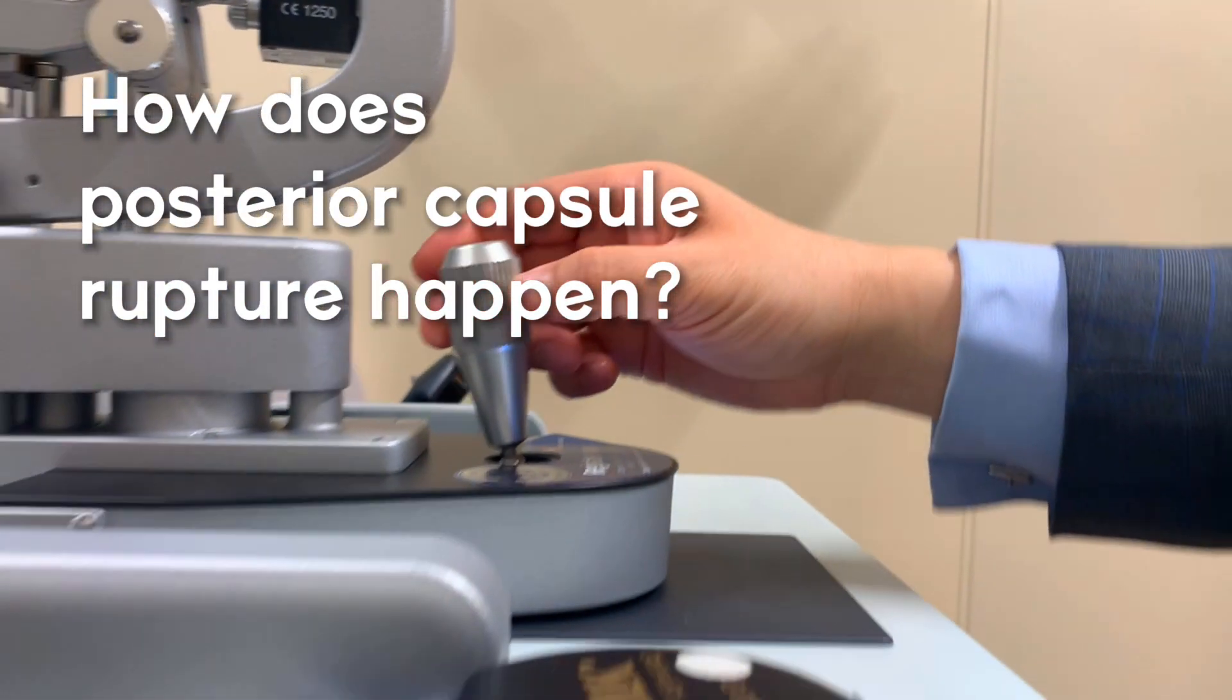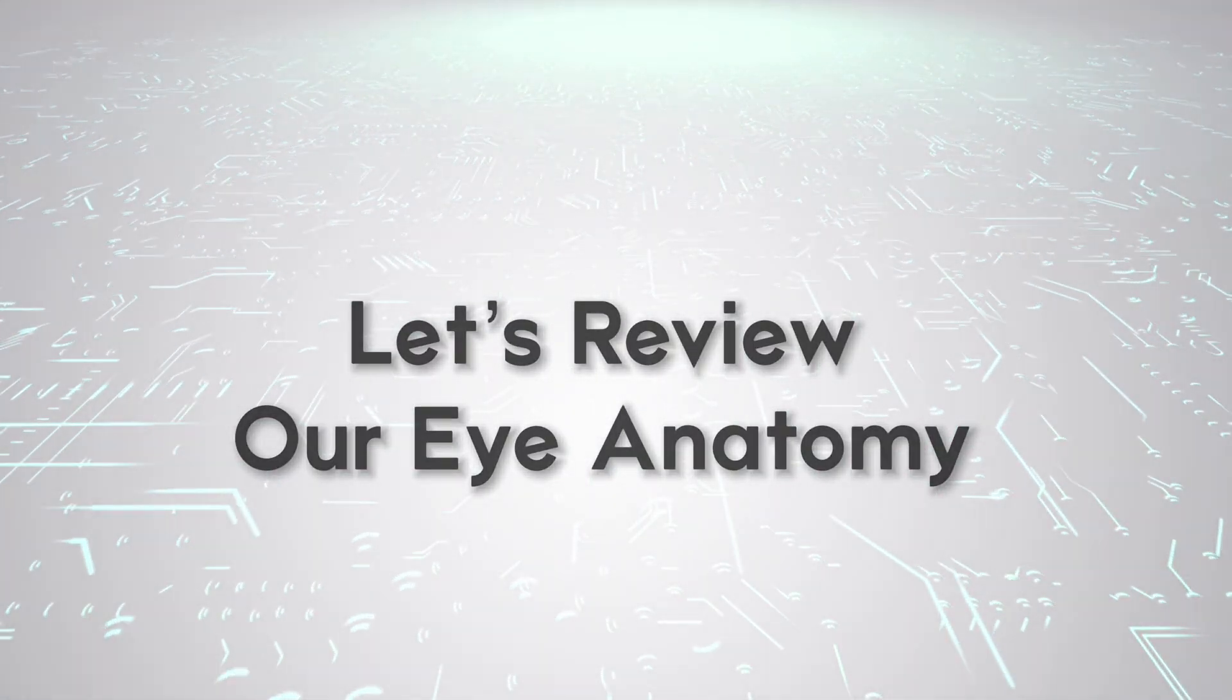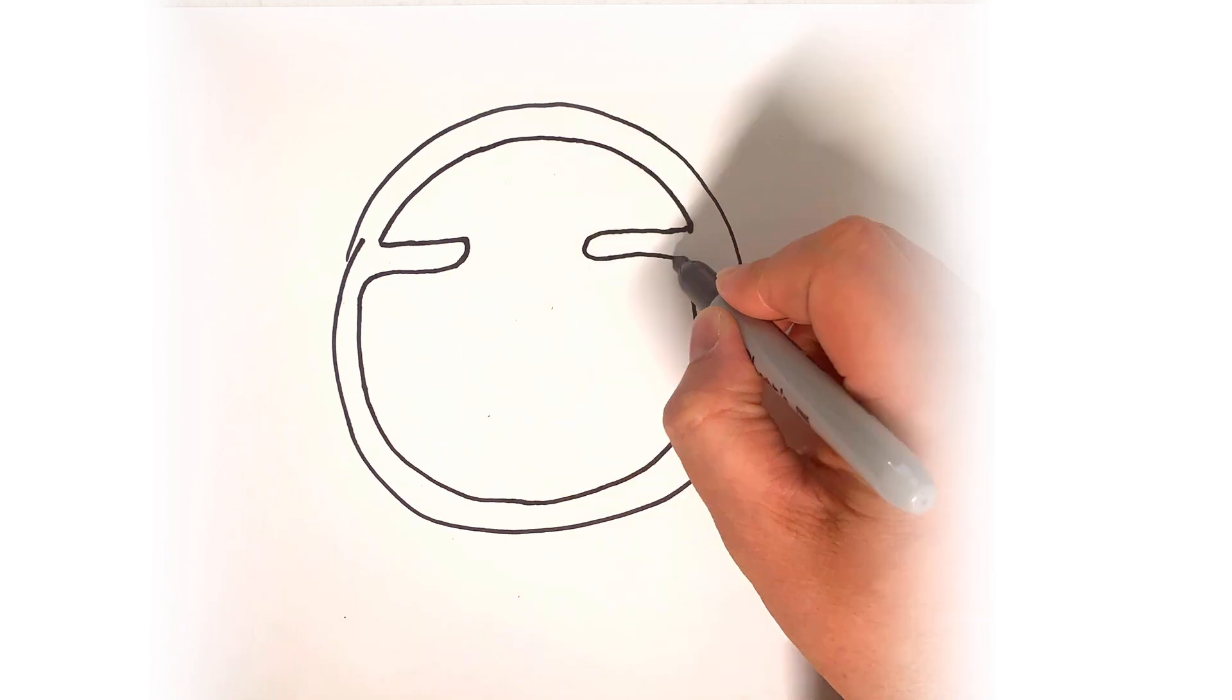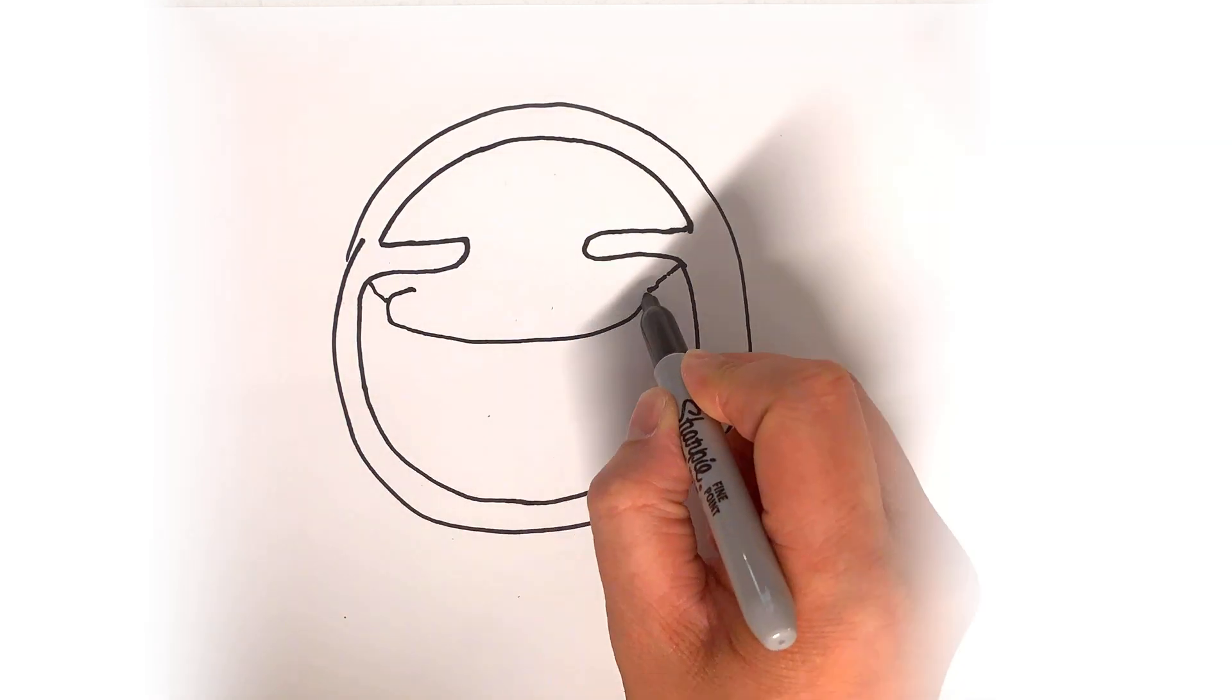Let's review our eye anatomy to understand capsule rupture during cataract surgery. Here I'm going to draw a raw diagram side view of the eye so we can identify the structure and anatomy to better understand this complication.